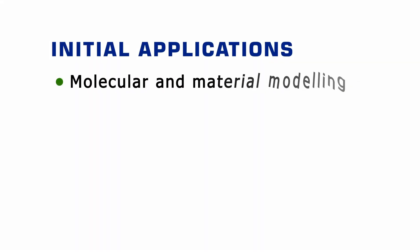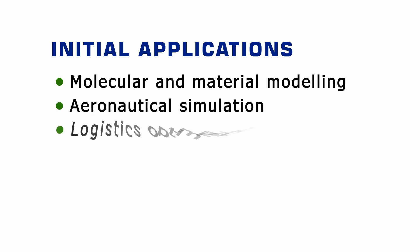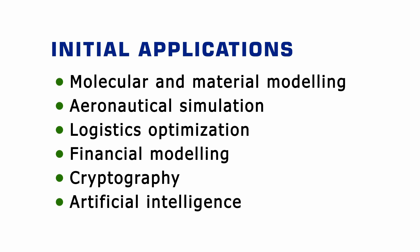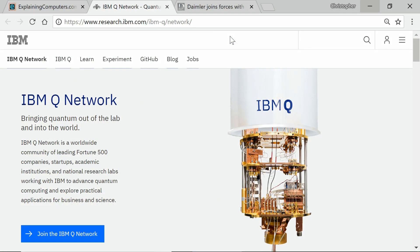Quantum computers are not intended to replace traditional computers, and lots of people ask what they will actually be used for. The general answer is that quantum computers will find initial application in areas such as molecular and material modeling, aeronautical simulation, logistics optimization, financial modeling, cryptography, and deep learning AI. The simulation of molecular systems is a particularly strong candidate as the systems to be simulated are themselves quantum in nature. IBM runs a community called the IBM Q Network to help facilitate commercial research.